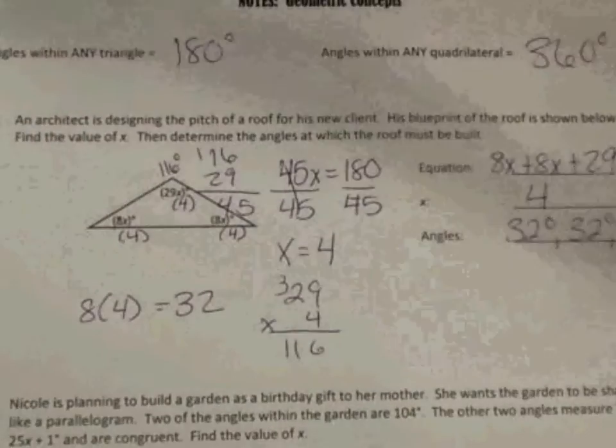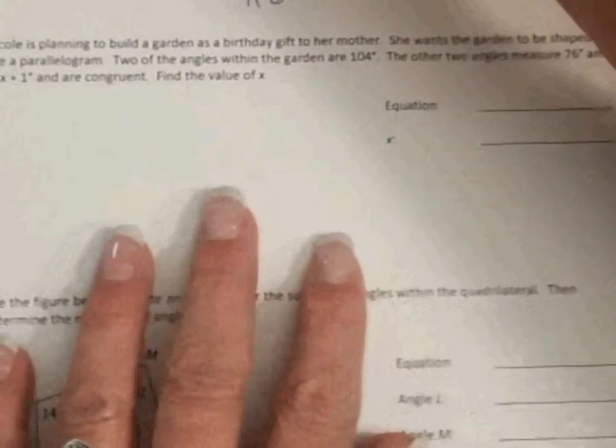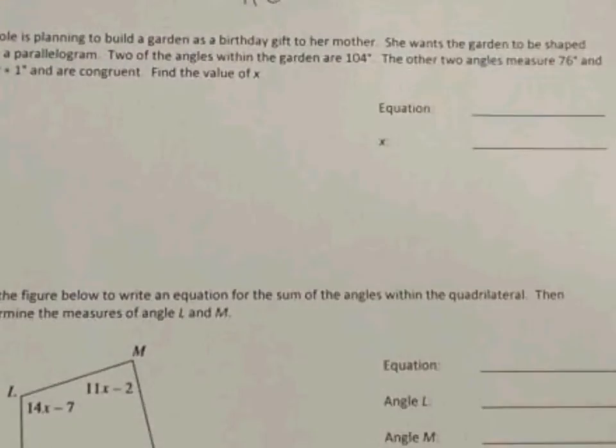Now Nicole is planning to build a garden as a birthday gift to her mother. She wants the garden to be shaped like a parallelogram. Two of the angles within the garden are 104 degrees. The other two angles measure 76 degrees and 25x plus 1 degree.